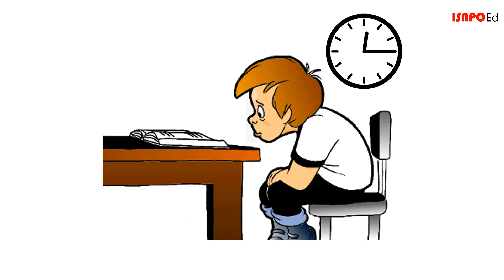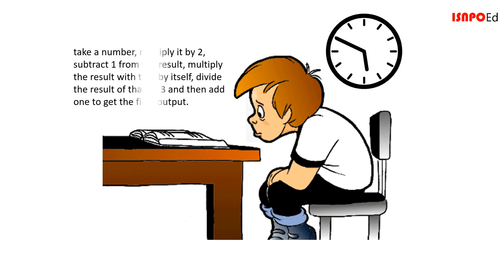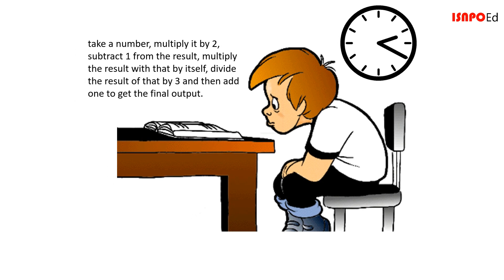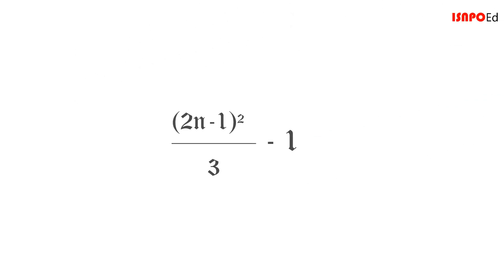If we didn't have these symbols, we would have spent a bunch of days just to take a number, multiply it by 2, subtract 1 from the result, multiply that result by itself, divide the result of that by 3, and then add 1 to get the final output. But now we have a compact, elegant expression.